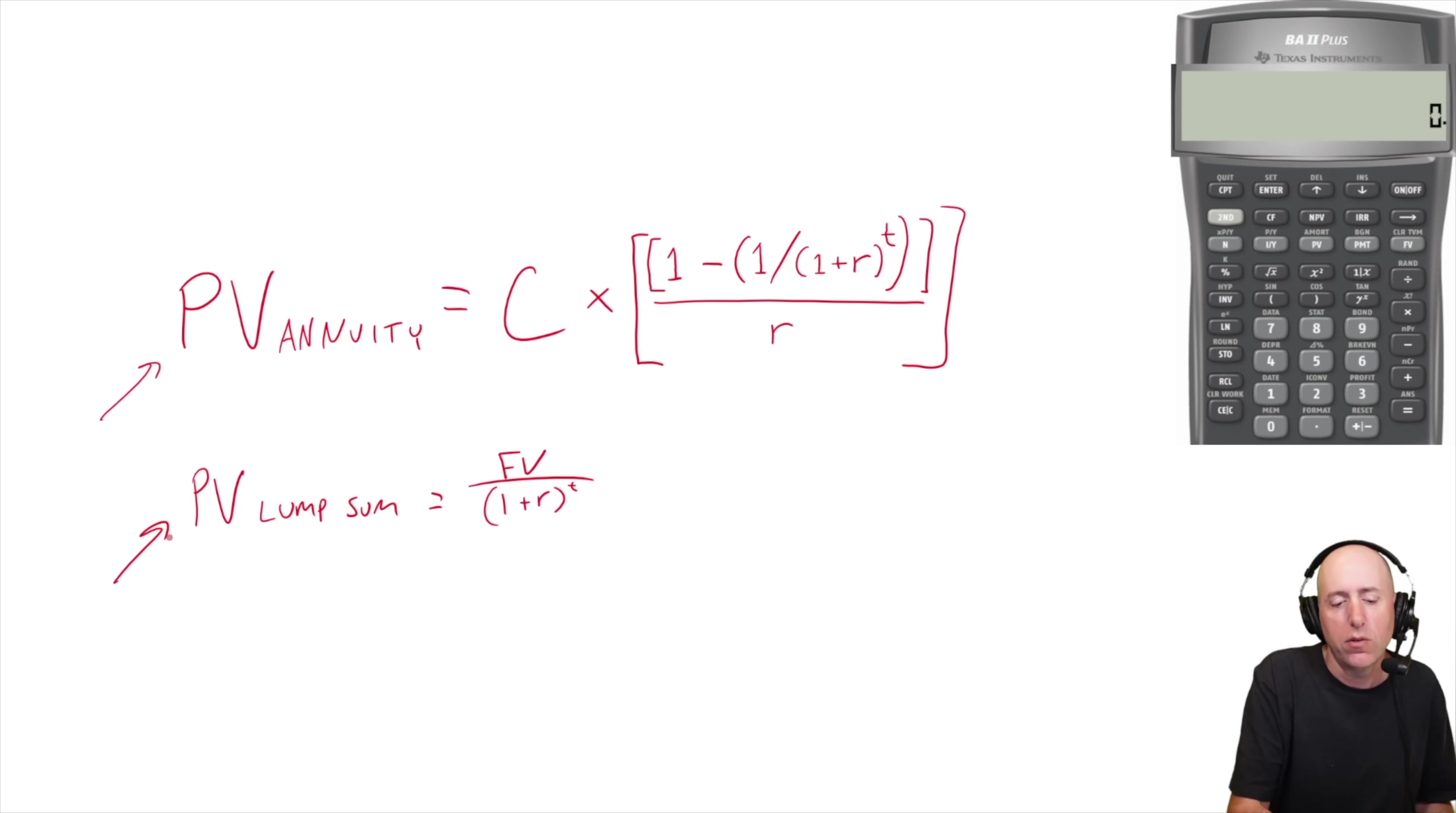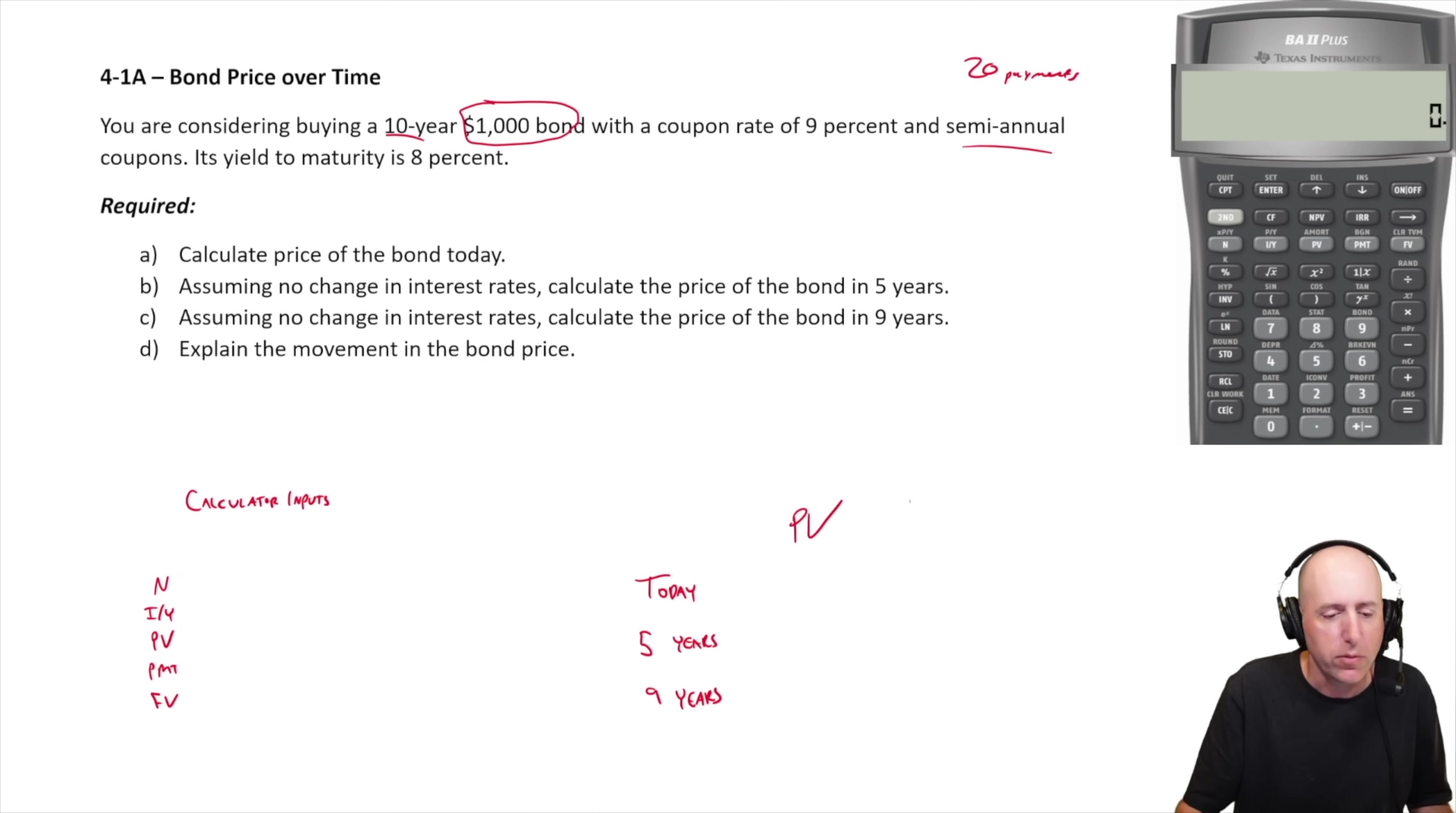So we'll solve at least a part of this problem by hand just to show you the math, and it can be done by hand very easily, but we'll focus on our financial calculator as we solve the problem. So I'll solve it first with a financial calculator. You're considering buying a 10 year $1,000 bond, coupon rate 9%, semi-annual coupons.